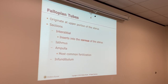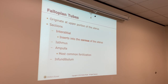The fallopian tubes originate at the upper portion of the uterus. That area is called the cornua. There are four different layers from inside to outside, from medial to lateral. You have the interstitial, which inserts into the cornua of the uterus. We have the isthmus — we also have an isthmus in the uterus, so be sure you don't get those confused.